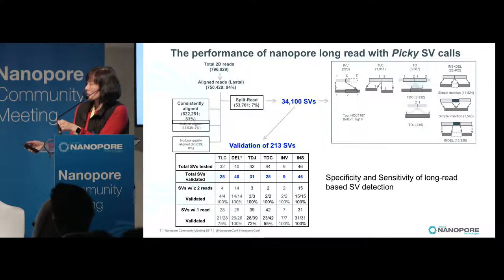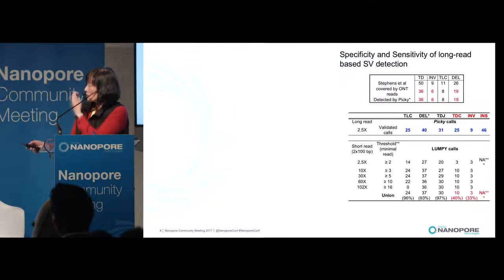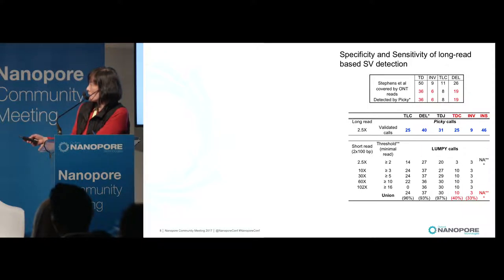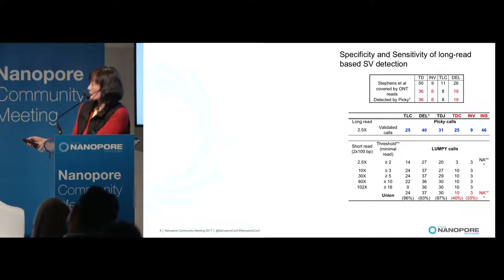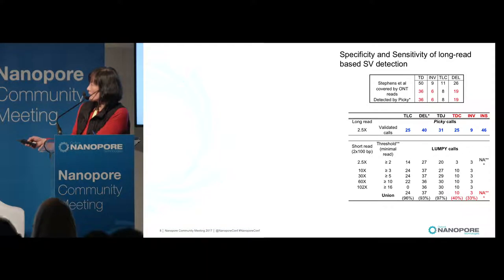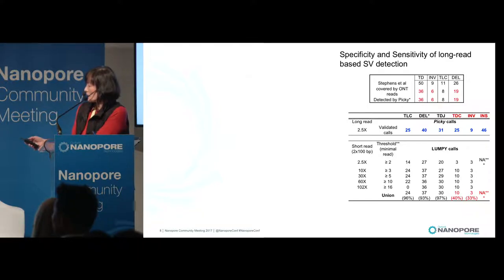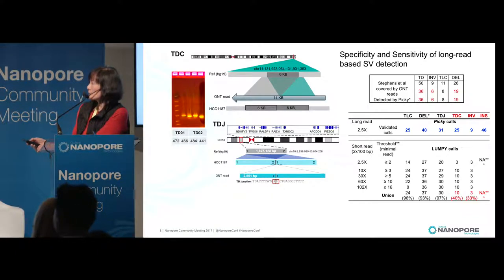Structural variations with one-read coverage validated at a range between 50% and 100% depending on the type. How about sensitivity? We took a previous study using short-read data and compared: taking 100x coverage of short-read data and comparing against a gold standard of 123 structural variations, our structural variation caller with just 2.5x coverage of long reads can do better than 100x short-read coverage, specifically in the categories of short tandem repeats, inversions, and insertions.